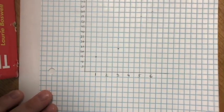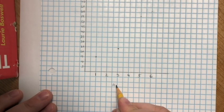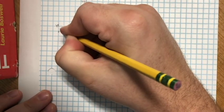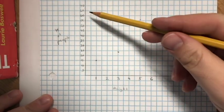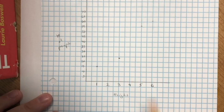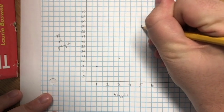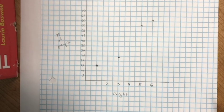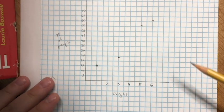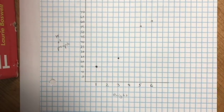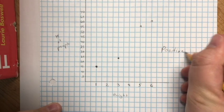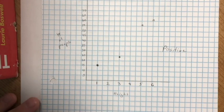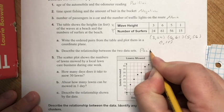On the graph, the x-axis is wave height and the y-axis is number of surfers, counted by fives. Plotting those four points, we can see a positive relationship. However, with only four points we can't say so with complete certainty — we'd need more data. You'll also hear the term positive correlation, which means the same thing as positive relationship.